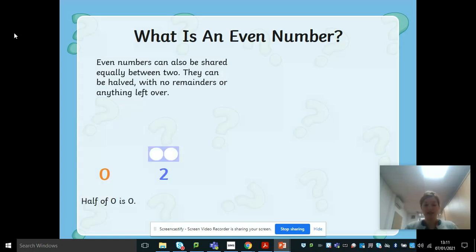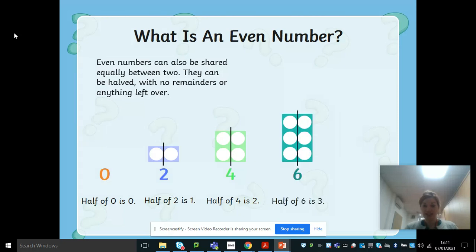So half of zero is zero. Half of two is one. Half of four is two. Half of six is three. Half of eight is four.